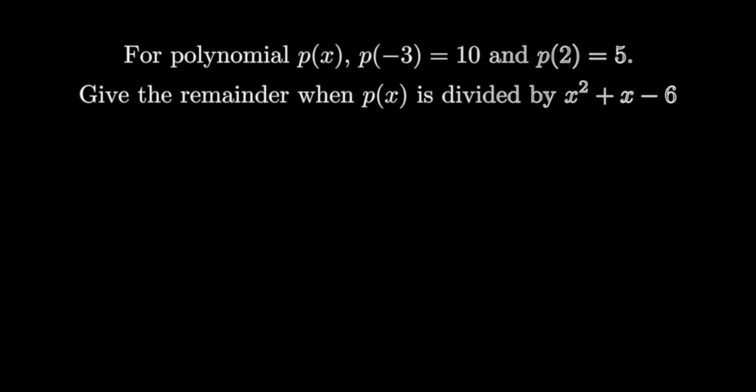Problem 2. For polynomial p of x, p of negative 3 is 10 and p of 2 is 5. Give the remainder when p of x is divided by x squared plus x minus 6.